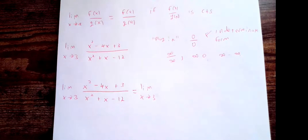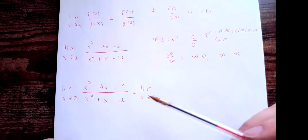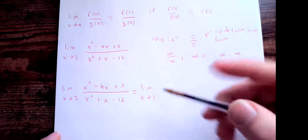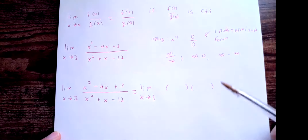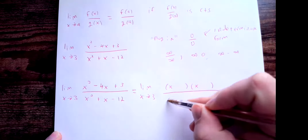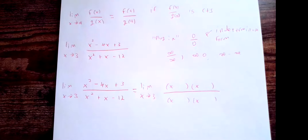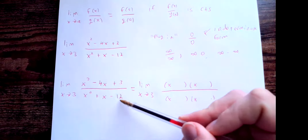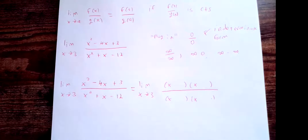I'll give you about 30 seconds to try factoring this yourself. You want to write the numerator and denominator each as a product of two factors: (x ± something)(x ± something). For the numerator, find numbers that multiply to 3 and add up to −4. For the denominator, find numbers that multiply to −12 and add up to 1.